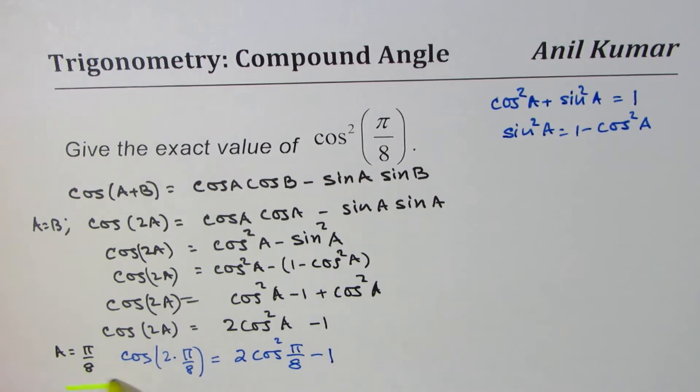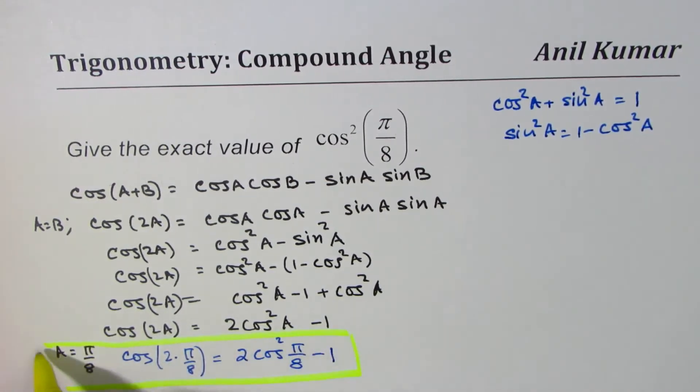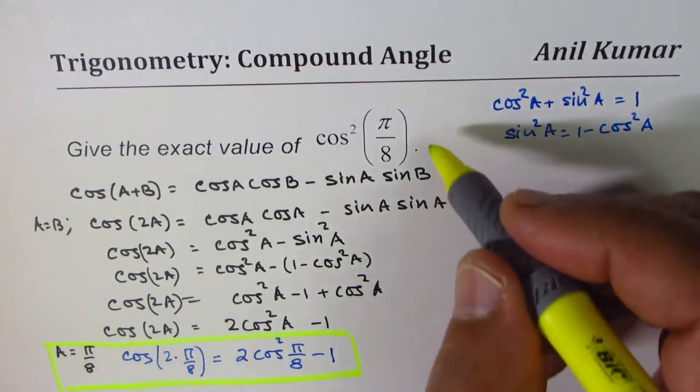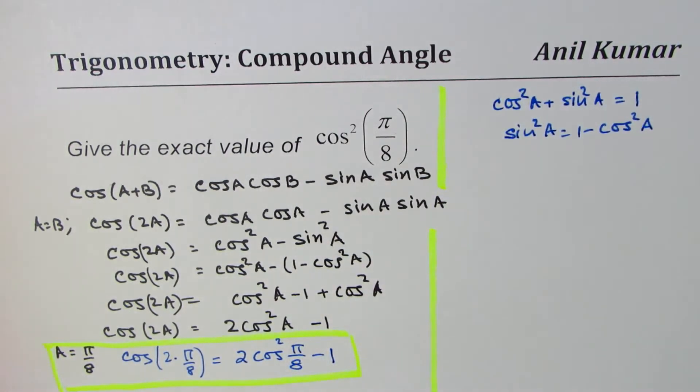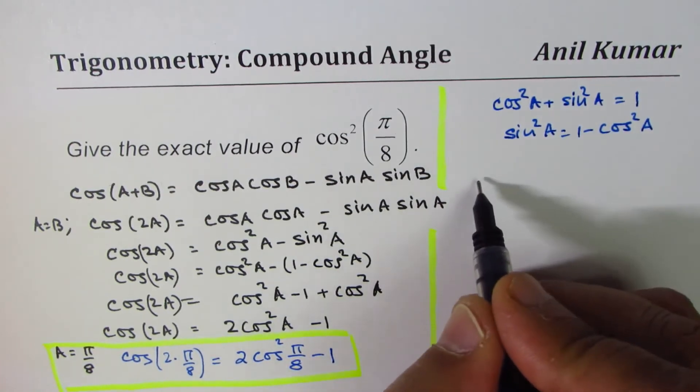So if I make a substitution here for angle A, which is π/8, let's see what we get. Now we'll rearrange this, right? So 2cos²(π/8) is what?